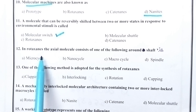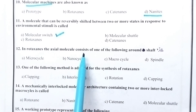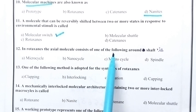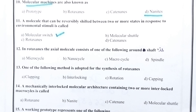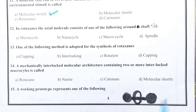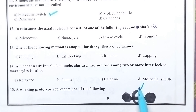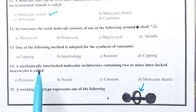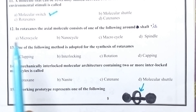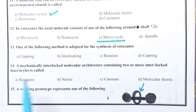In rotaxins, the axial molecule consists of one of the following around the shaft. Rotaxins consist of a dumbbell shape, two macromolecules, and a shaft — so a macrocycle will be present. Coming to the 12th question, macrocycle is the right answer.